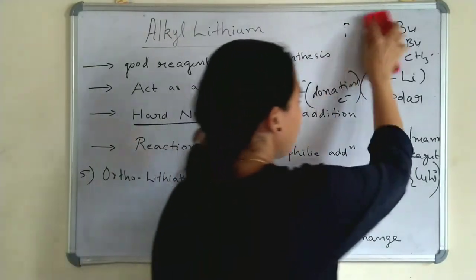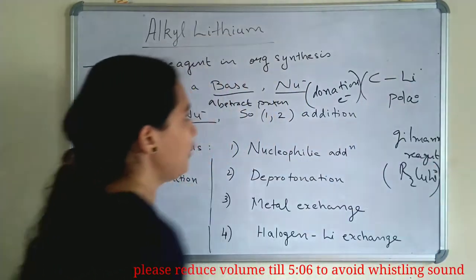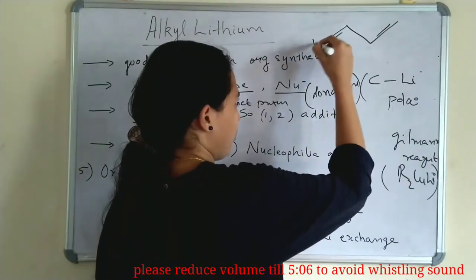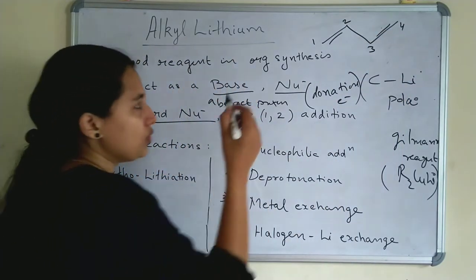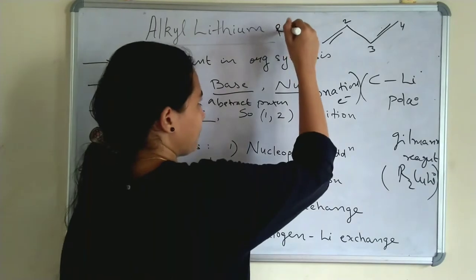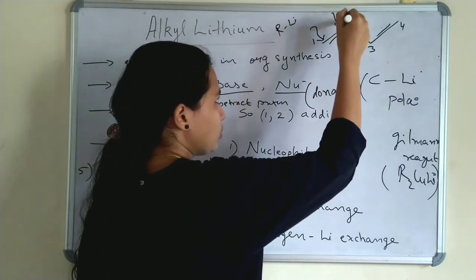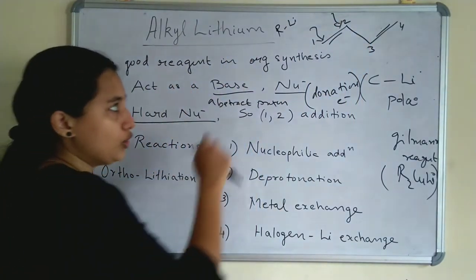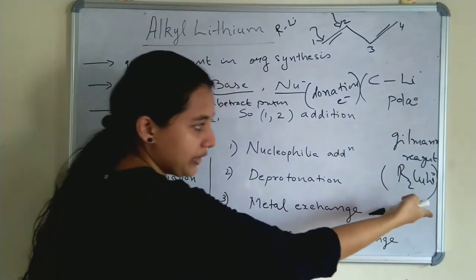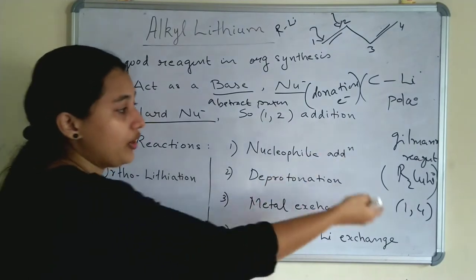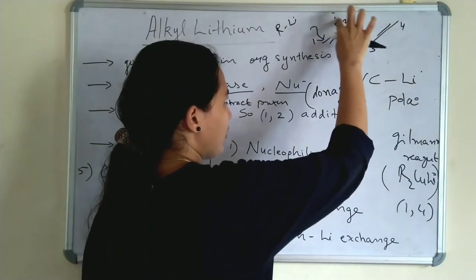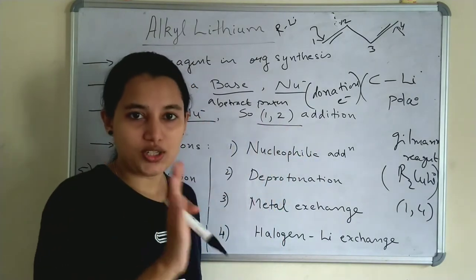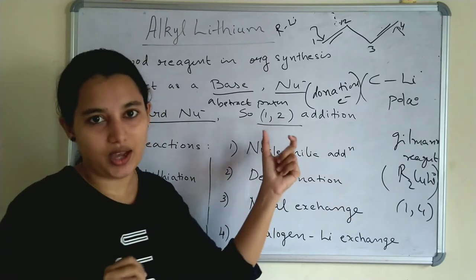So what is 1,2-addition? Taking butadiene and numbering the carbons 1, 2, 3, 4 — if we add Alkylithium (R-Li), it will add to the 1st and 2nd carbons, not the 1st and 4th carbons. While the Gilman reagent undergoes 1,4-addition, adding to the 1st and 4th positions. So hard nucleophile means 1,2-addition at the 1st and 2nd carbons.